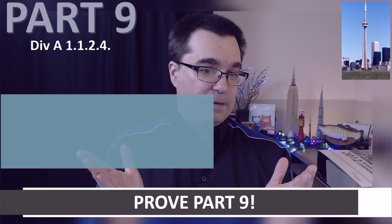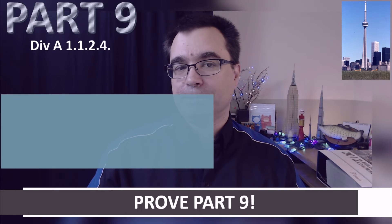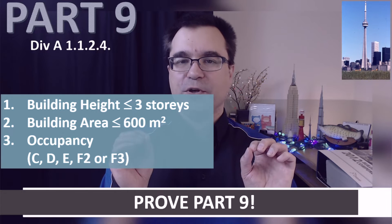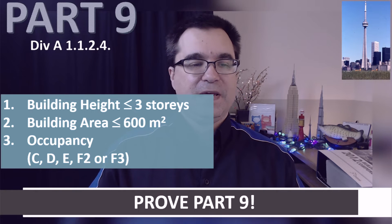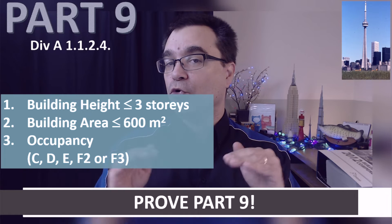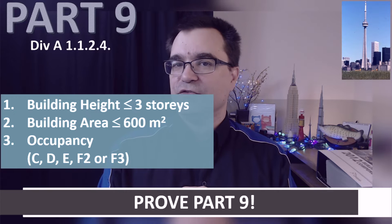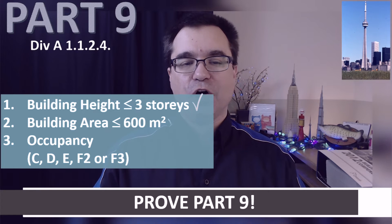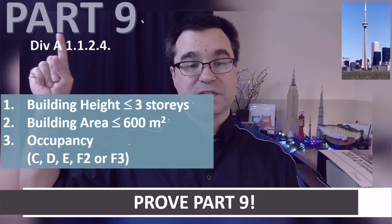Under Division A, Article 1.1.2.4 in Volume 1 of the Ontario Building Code, there are three characteristics that define a Part 9 building. We don't even care about Part 3 buildings at this point, only Part 9. Here they are. Number one, the building height must be no more than 3 stories. The building area must be no more than 600 meters squared. And the occupancy must be one of C, D, E, F2, or F3. As long as all of these characteristics are true, then automatically the building in question is a Part 9 building.